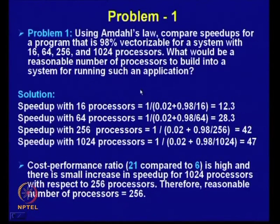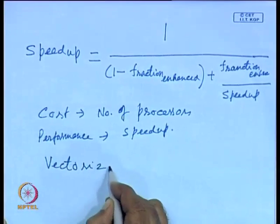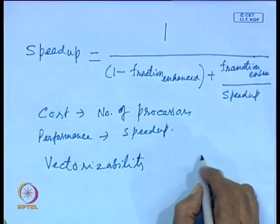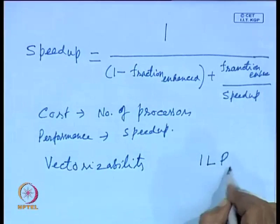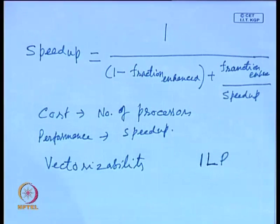The second problem is also related to Amdahl's law: compare speed-ups for programs with vectorizability decreasing from 98 percent to 95, 90, 85, and 80 percent. The objective is to see how speed-up changes as vectorizability — or instruction level parallelism — decreases. As ILP decreases, we find we do not get good speed-up.